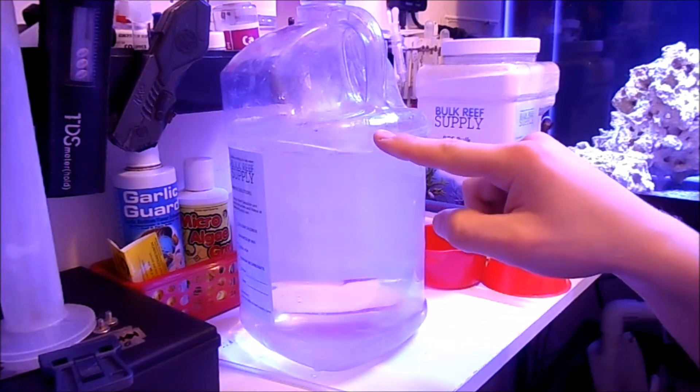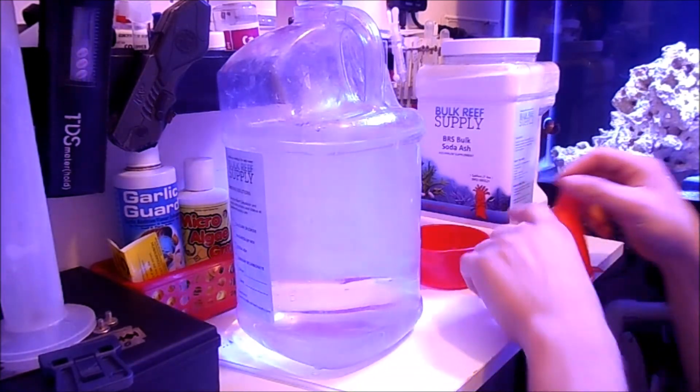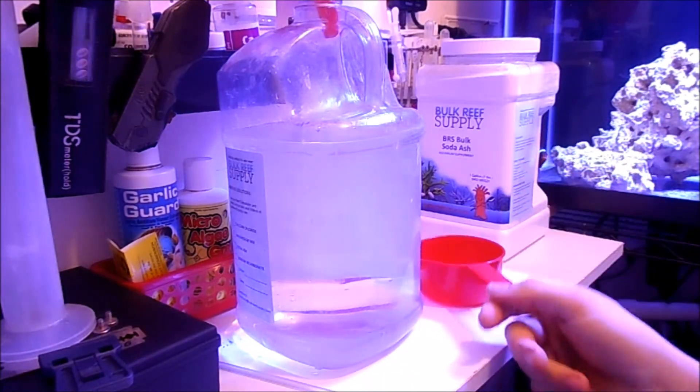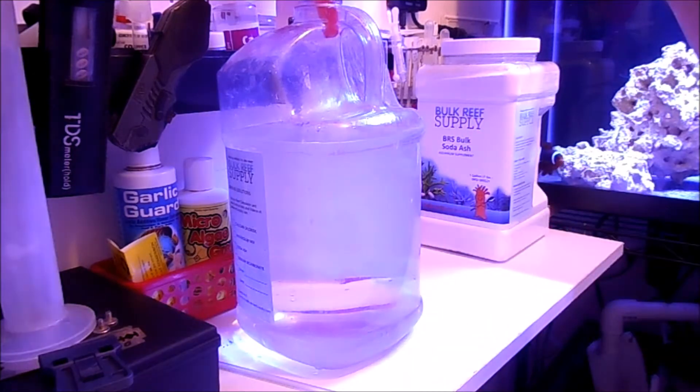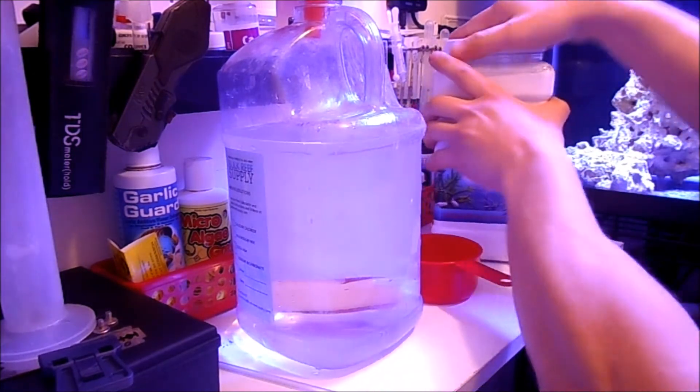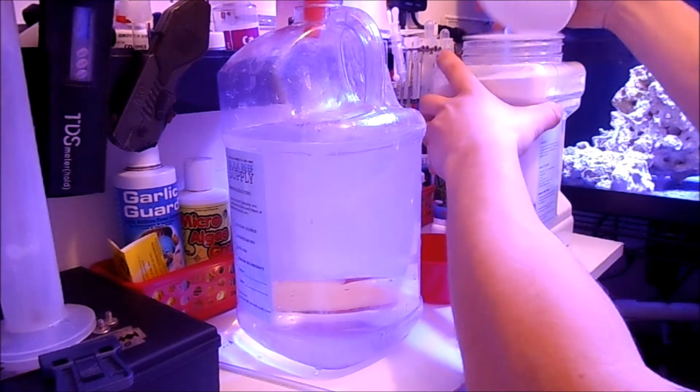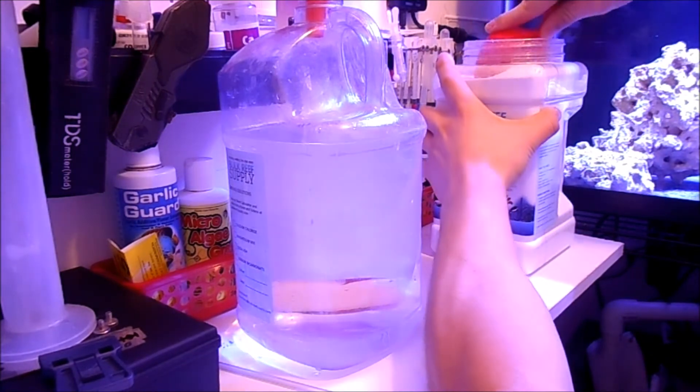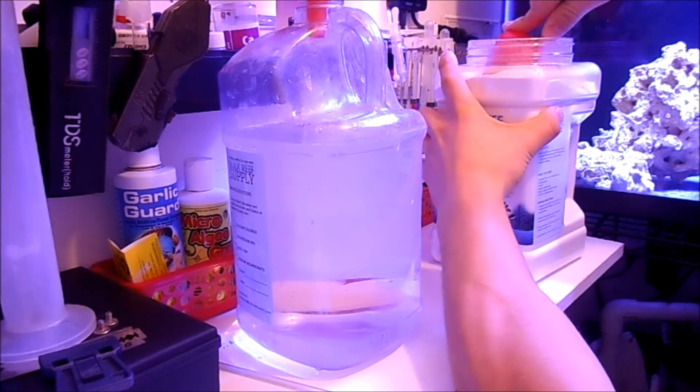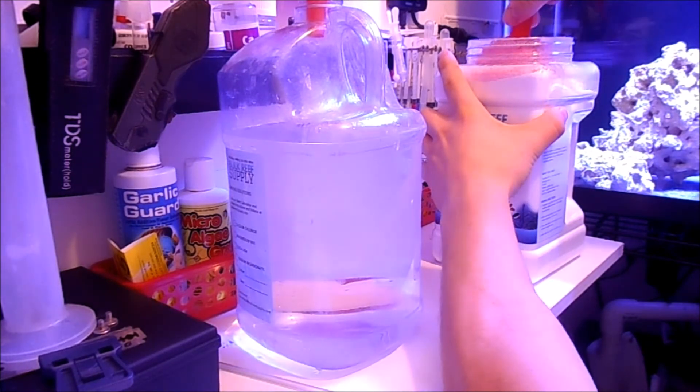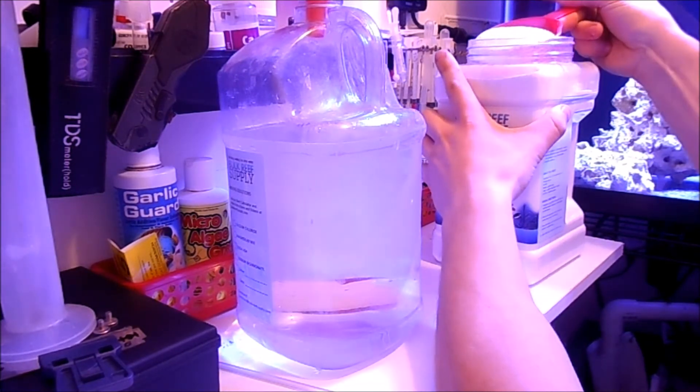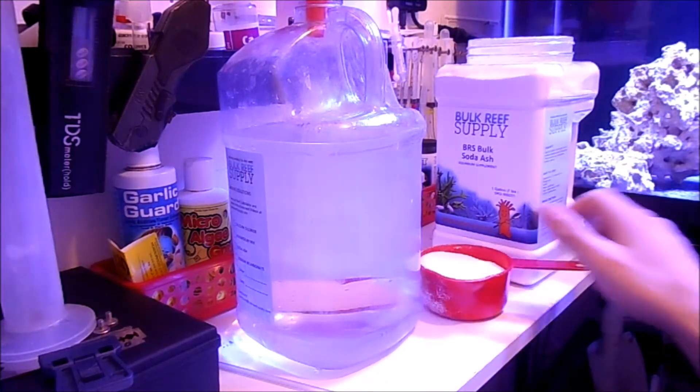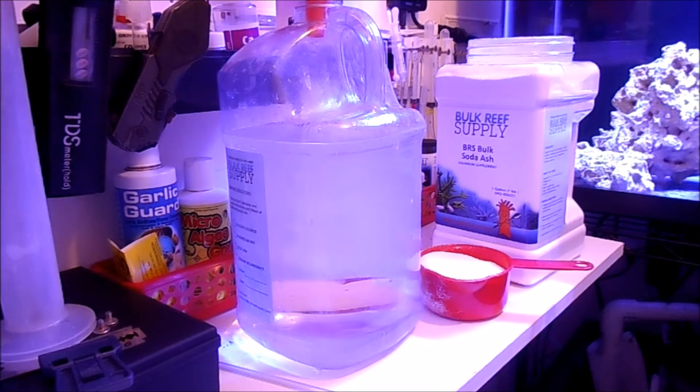So three-fourths gallon full of RODI water, one cup measuring cup. And the directions state that you need two level cups of dry to make one gallon. All right, so let's go ahead and get two level joint cups. I'm actually going to use a smaller measuring cup to get a little bit more in there since it's a little awkward.